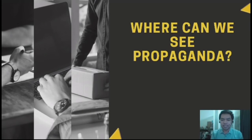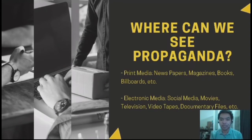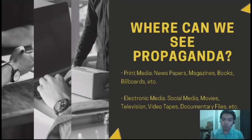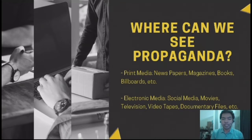Where can we see propagandas? There are actually two ways: one is through print media, and another is through electronic media. Print media includes newspapers, magazines, books, billboards, etc. — things we can see and physically touch. Another is electronic media, which is the most common one we use nowadays, especially in 2020–2021 due to the pandemic.